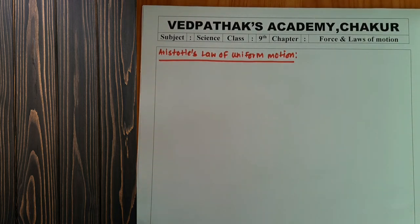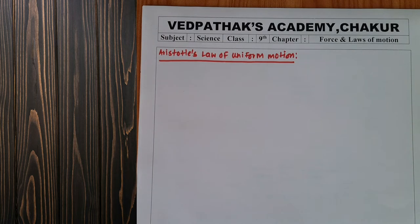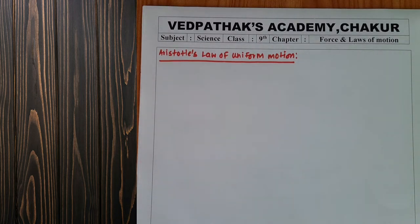Before Newton, as we know, the laws of motion were given by the scientist Newton. But before Newton, we have two more scientists who contributed a lot in this field of motion — that is, laws of uniform motion.